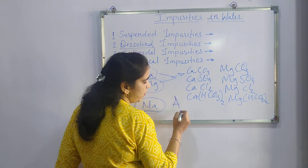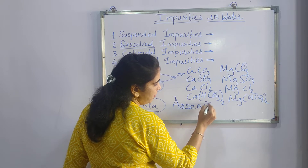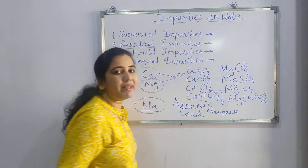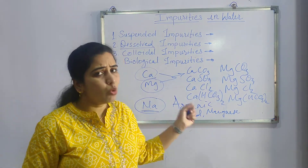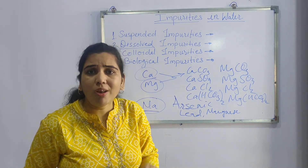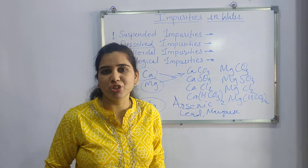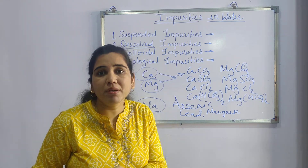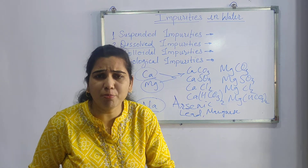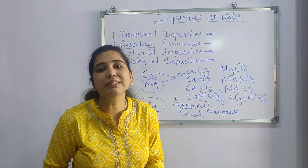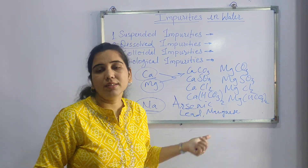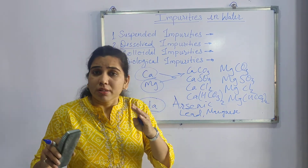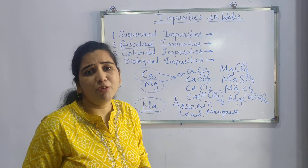Along with sodium, there is presence of some elements like arsenic, lead, and manganese. These metals are found in very negligible amounts but are poisonous in nature. When this water is directly consumed, it can cause dangerous symptoms or particular diseases. Arsenic, manganese, and lead are metals that may be present in water as dissolved impurities, harmful not only to human beings but also to different types of animals.